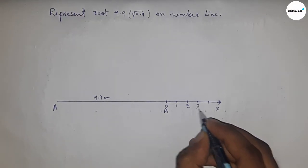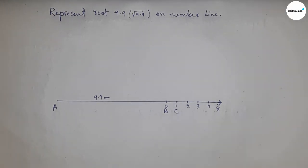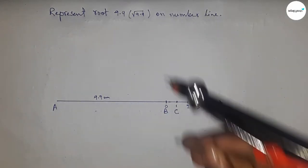So this is 0, 1, 2, 3, 4 and so on, and taking this is C point. Next, bisect the line AC. So taking greater than half of AC and drawing arcs by this way.